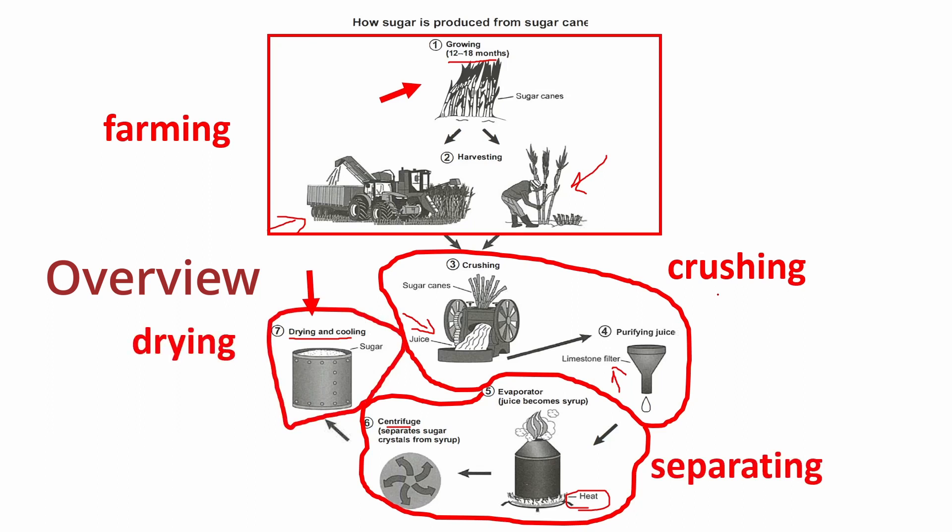Overall, we will have four main stages: farming, crushing, separating, and drying. For your overview, all you need is to mention the number of steps, the start point, the end point, and also the main steps or stages.